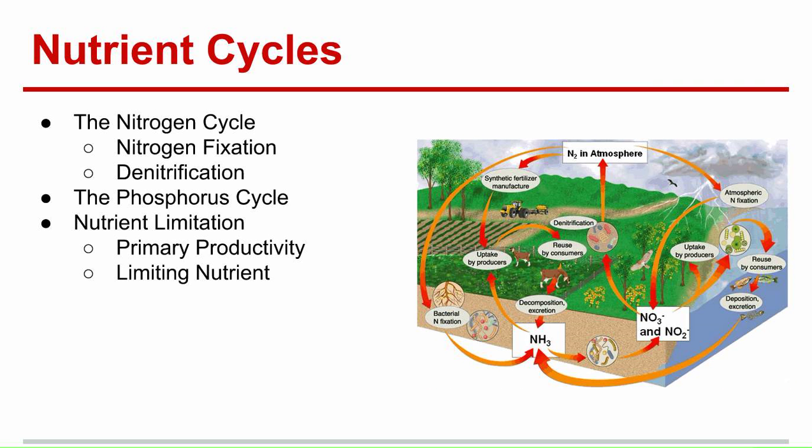More nutrient cycles. There's the nitrogen cycle. Nitrogen makes up 70% of the air we breathe, and all organisms require nitrogen to produce amino acids, which then make proteins. There are two main parts of the nitrogen cycle. Nitrogen fixation is the process of converting nitrogen into ammonia, and then bacteria can convert ammonia into nitrates and nitrites, which producers use to make proteins. Denitrification is the conversion of nitrates into nitrogen gas, which is then released into the atmosphere.